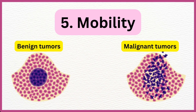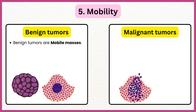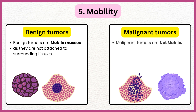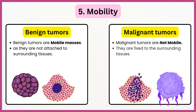Mobility of Tumors: Benign tumors are mobile masses, as they are not attached to surrounding tissues. Malignant tumors are not mobile; they are fixed to the surrounding tissues.